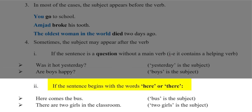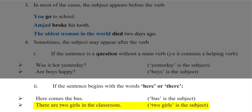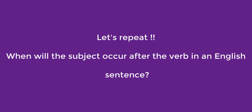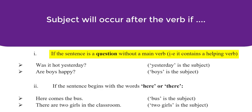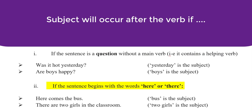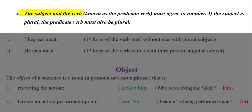Secondly, if the sentence begins with the words here or there, we will have the subject after the verb. 'Here comes the bus.' The subject bus comes after the verb comes. 'There are two girls in the classroom.' The subject two girls occurs after the verb are. So to summarize: the subject appears after the verb if the sentence is a question without a main verb, or if the sentence begins with the words here and there. The subject and the verb must agree in number.